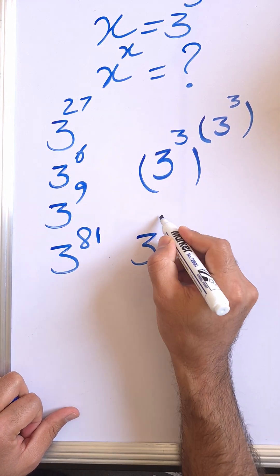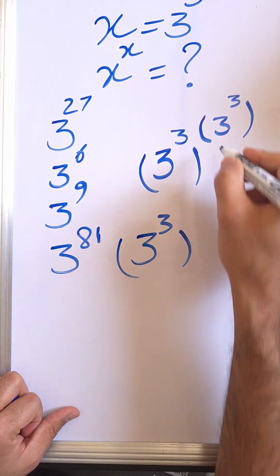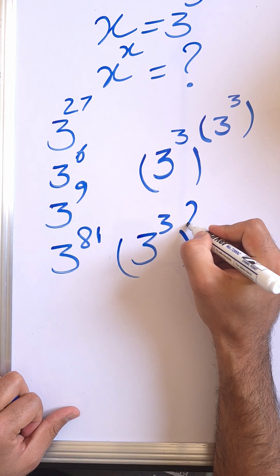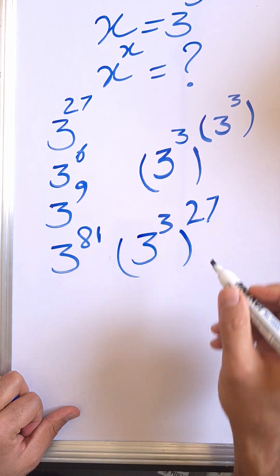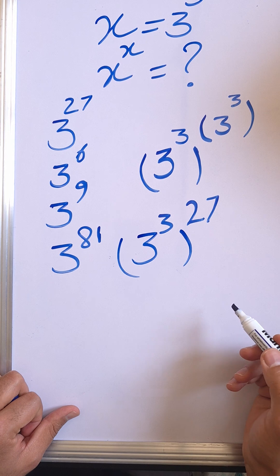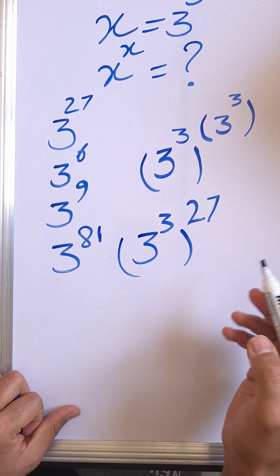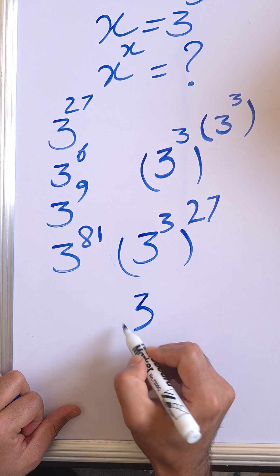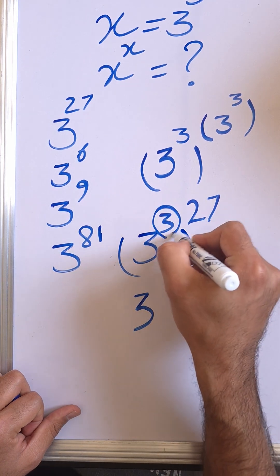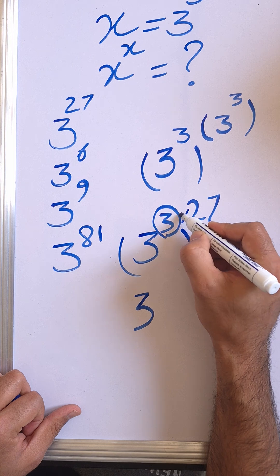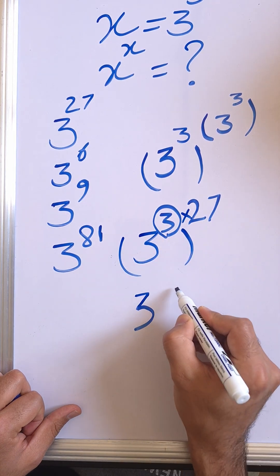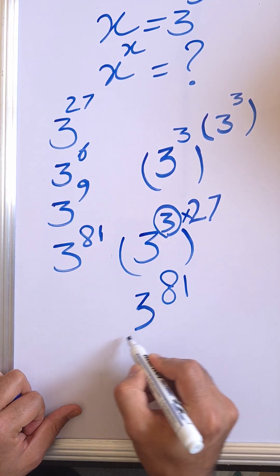So 3 to the 3 to the power of 27, and now based on the exponents rule, we can just multiply the exponents. So we can write 3 to the power of 3 times 27, which is 81.